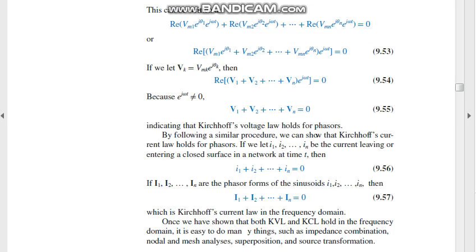We can convert it to Kirchhoff's current law. Kirchhoff's current law holds for phasors too. If I1, I2, I3, and In be the current leaving or entering a closed surface in a network at a time, then adding up all the currents will be zero. If I1, I2, up to In are phasor forms of sinusoids, then we can find this too.